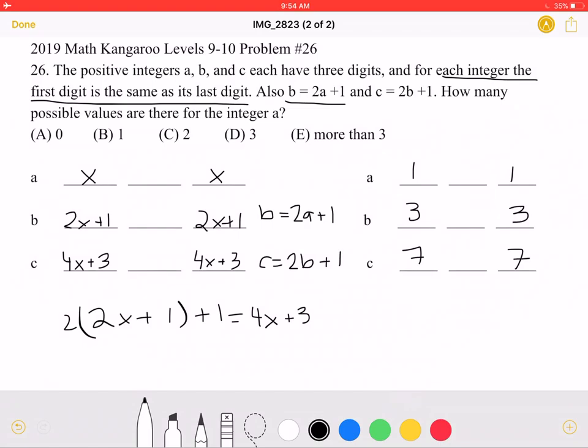Now, let's think what numbers we can put in the middle to work. Well, we know that the number in the middle must be greater than 5, because if it was less than 5, A times 2 plus 1 wouldn't be a number in the 300s. So, we have 5, 6, 7, 8, 9. Let's test that. If we have 5 here, then here we would have 0, and that doesn't work, because 303 times 2 won't give you a number in the 700s. So, 5 doesn't work.